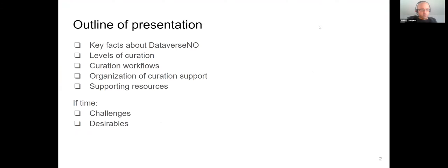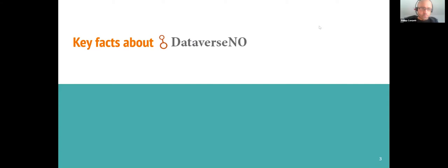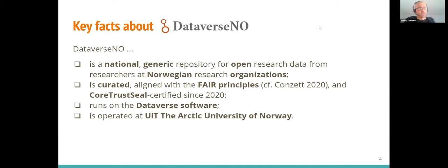Here are some of the topics I'm going to talk about: key facts about our repository Dataverse.no, different levels of curation, our curation workflows, how we have organized curation support at the repository, and supporting resources we use for curation. Dataverse.no is a national generic repository for open research data from researchers at Norwegian research organizations. It's a curated repository aligned with the FAIR principles and since last year we have been CoreTrustSeal certified. It's a national repository but with an institutional focus - currently we have 10 partner institutions, all universities or university colleges.